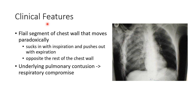Let us see about the clinical features of flail chest. The flail segment of chest moves paradoxically — that is, it sucks in with inspiration and pushes out with expiration. This will be opposite to the rest of the chest wall. There may be an underlying pulmonary condition which will lead to respiratory compromise.